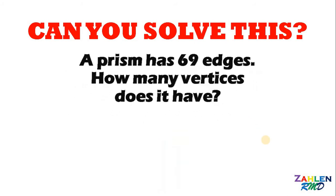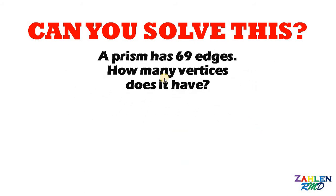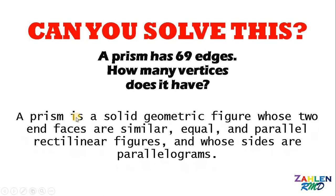Now let's answer this question together. The question is very simple: a prism has 69 edges, then how many vertices does it have? First, what is a prism? A prism is a solid geometric figure whose two end faces are similar, equal, and parallel rectilinear figures, and whose sides are parallelograms.